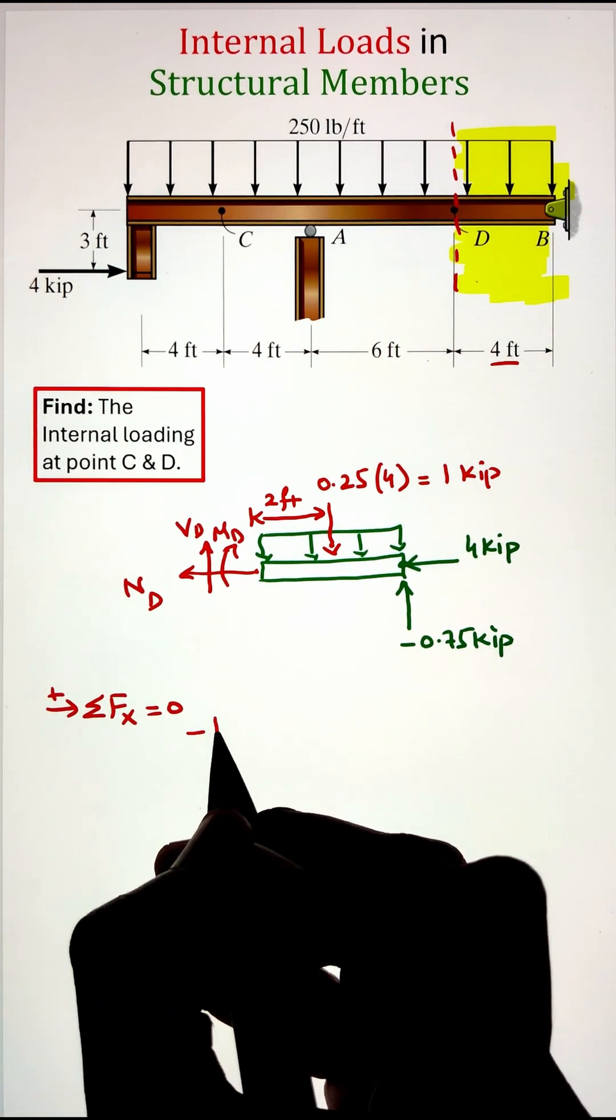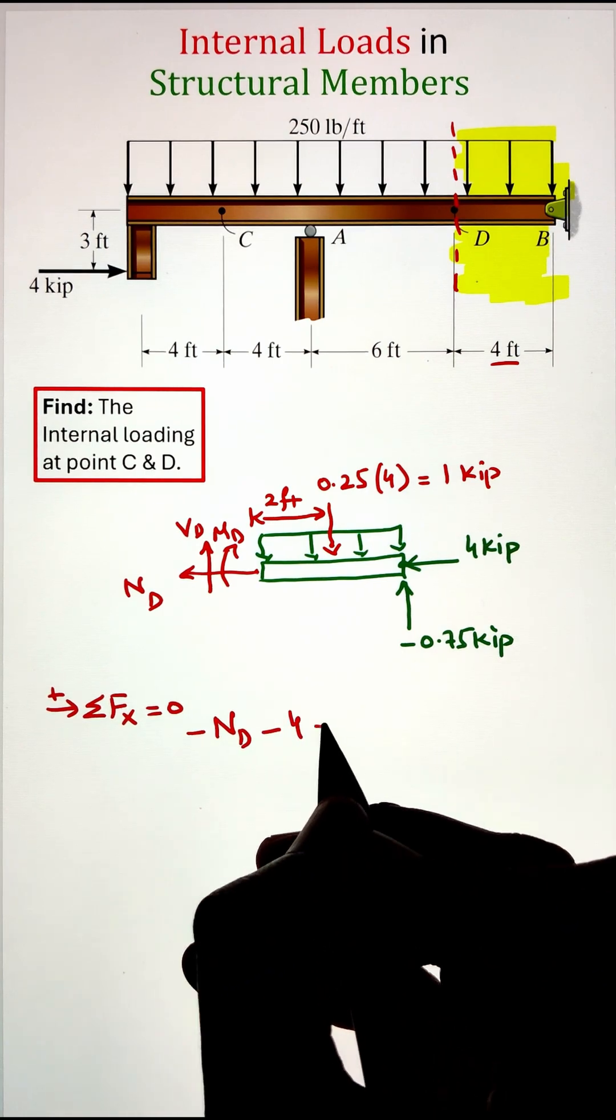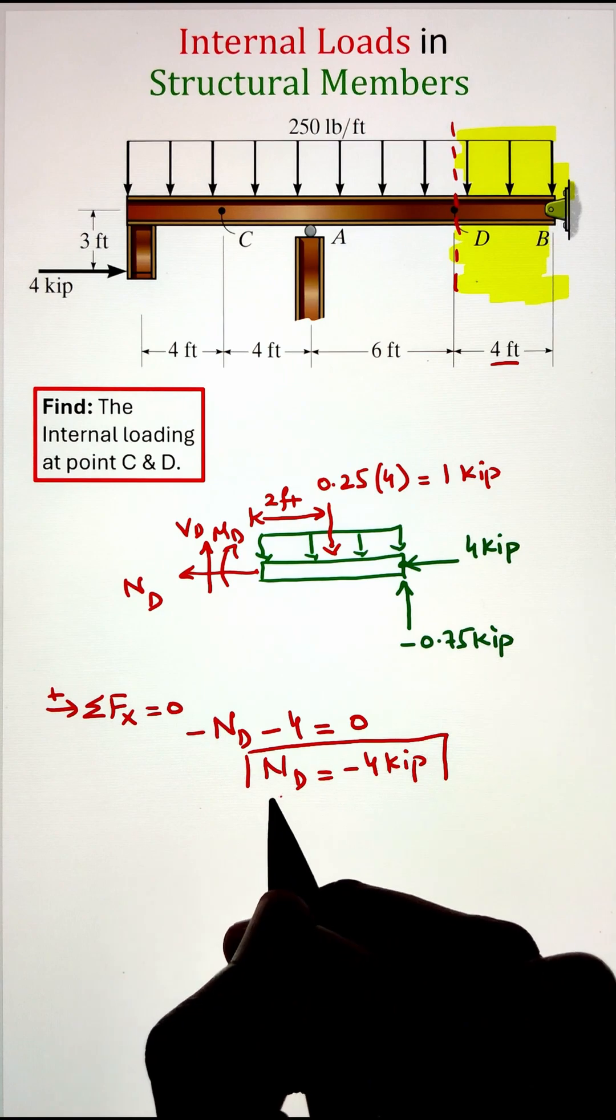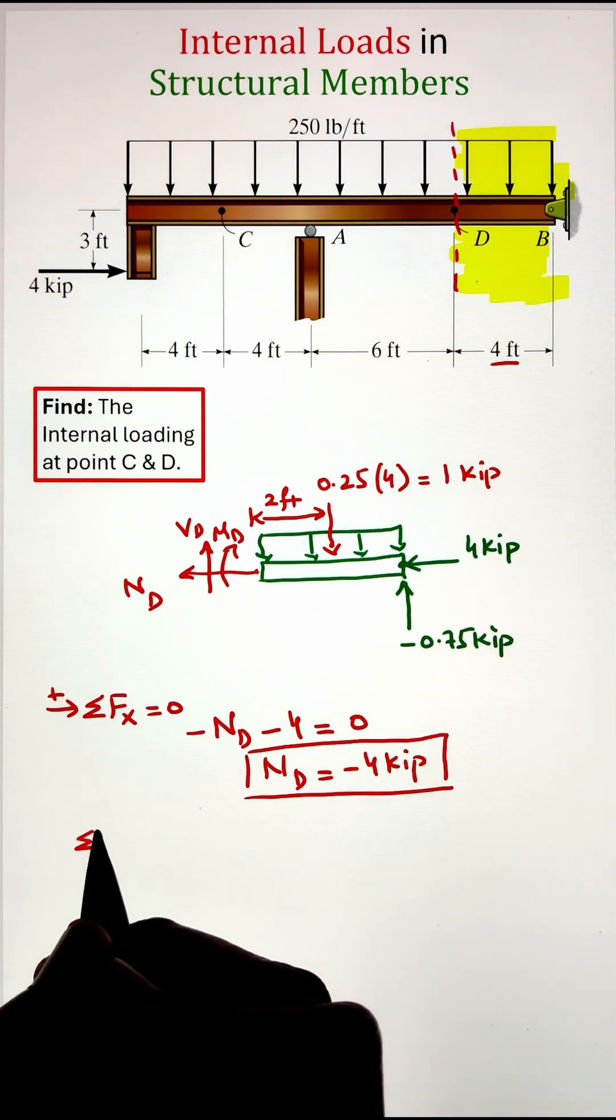So starting with summation of forces along the x-axis equals zero, here we have just one unknown in x direction. So our normal force equals negative 4 kilopounds.